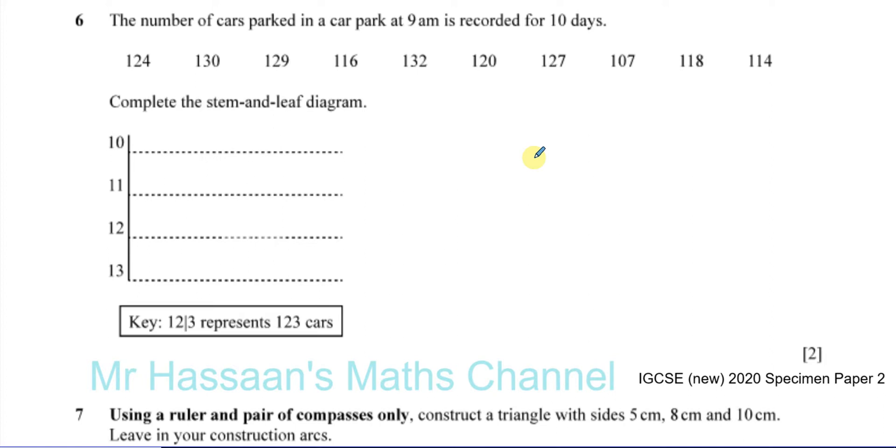Here they've told us that the number of cars parked in a car park at 9 a.m. is recorded for 10 days. They've given us these numbers here. So this is like on one day, there's 124 cars parked at 9 a.m., and the next day, so on and so forth. So we've got to complete the stem and leaf diagram.